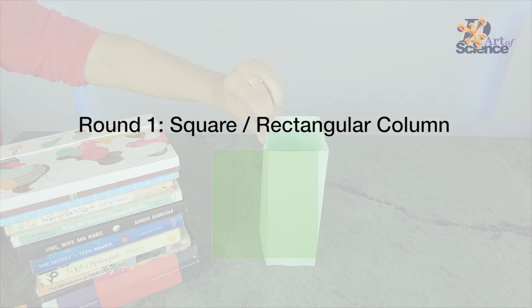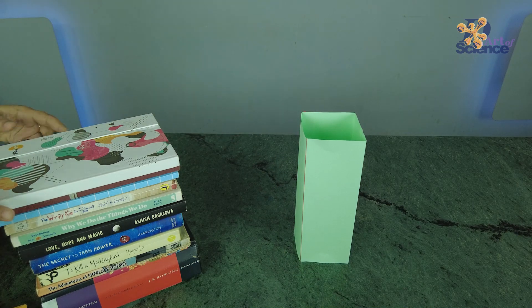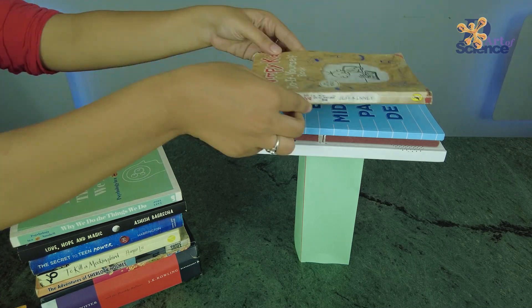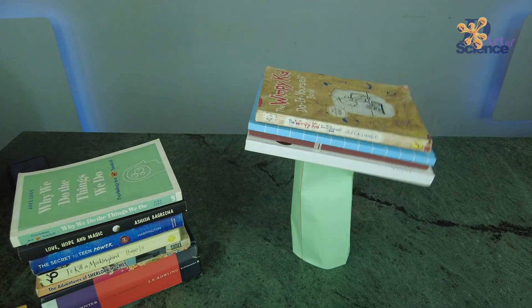Let's do the square next. A square column also took 4 books.